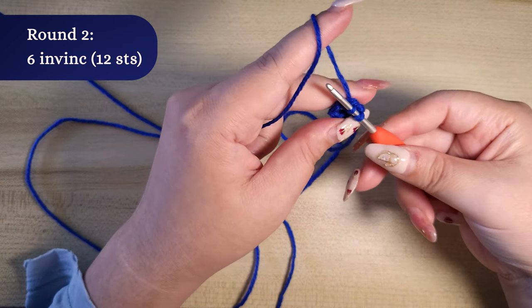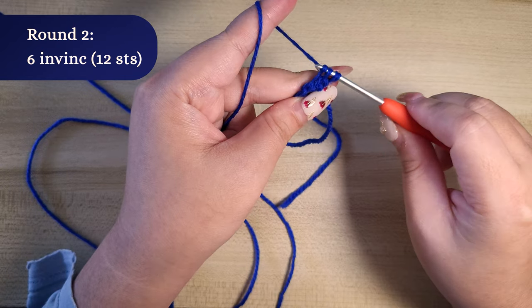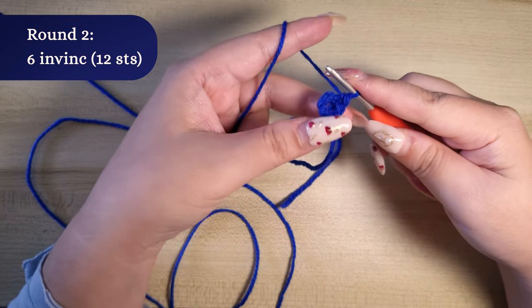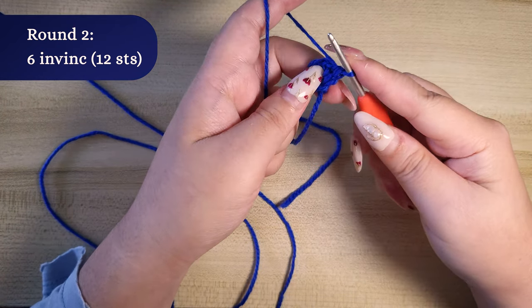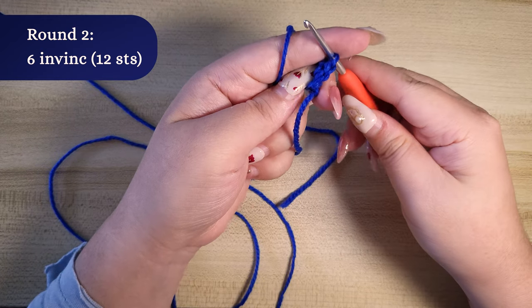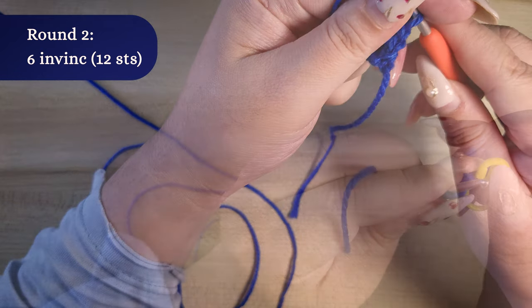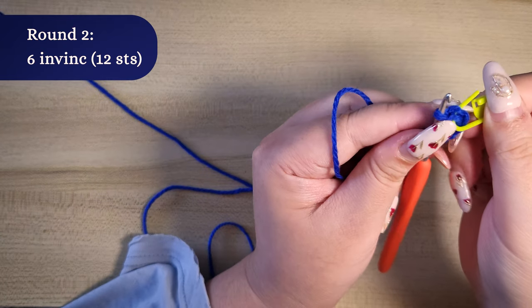I realize that it might be hard to see what I'm doing as I'm using small hook and yarn in this video. That's why I'm linking separate step-by-step tutorials. Don't forget to use a stitch marker and mark the first stitch of the round.